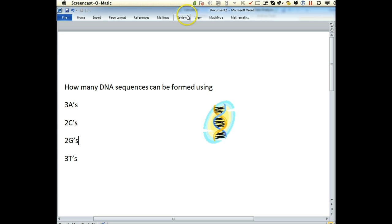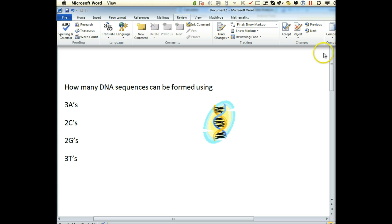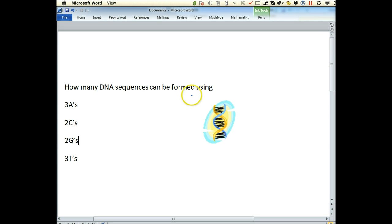And what we want to know is how many DNA sequences can we make using three A's, two C's, two G's, and three T's.